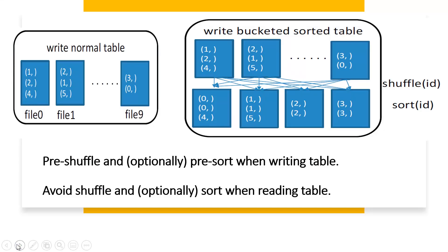Let's try to understand from this scenario. The first one is a normal table where we're writing into a normal Hive table. Different files are created based on the number of partitions for that table. Here we have 10 partitions, so the data is arranged into 10 partitions.